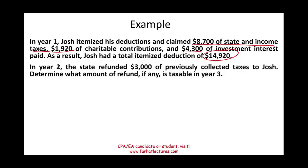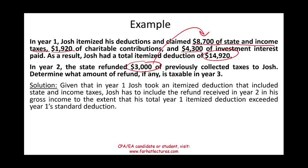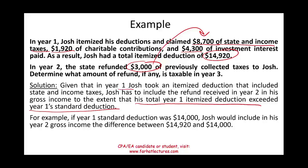In year two, the state refunded Josh $3,000 — remember, this $3,000 was already deducted as part of his state and local income tax deduction. We need to determine the amount, if any, that is taxable. Because the money was received in year two, we report it when filing for year two. Since Josh took a deduction in year one, he must include the refund in his gross income to the extent that his total year-one itemized deductions exceed his year-one standard deduction. Let's assume his standard deduction was $14,000.